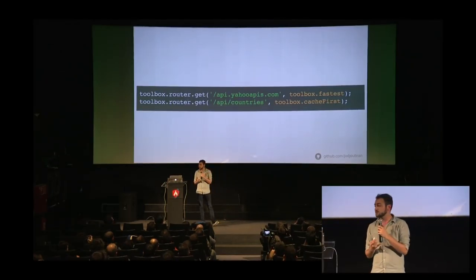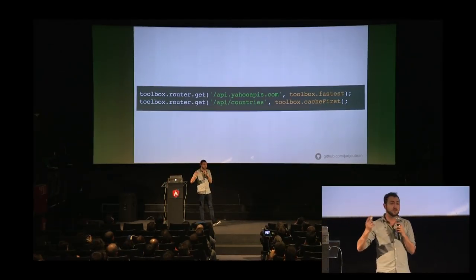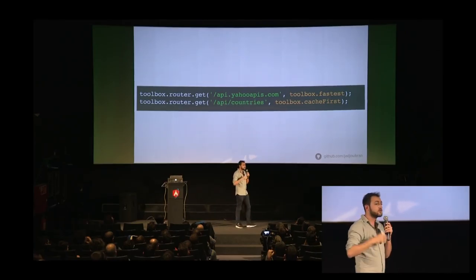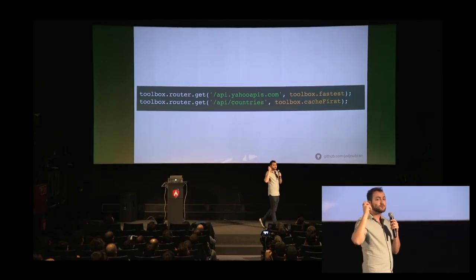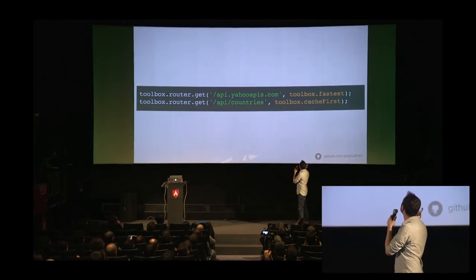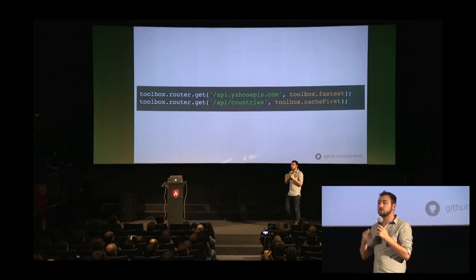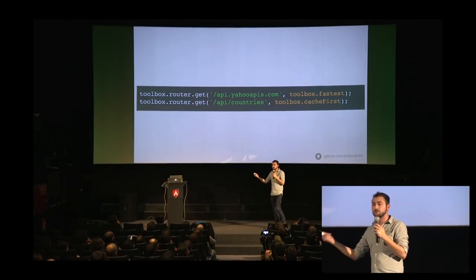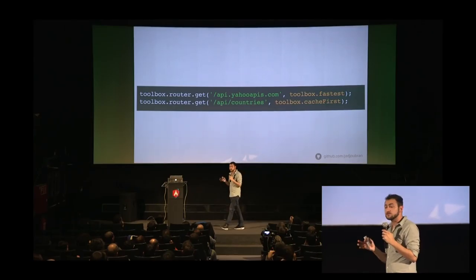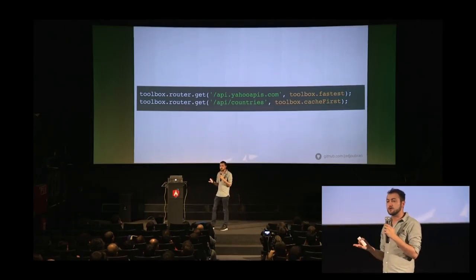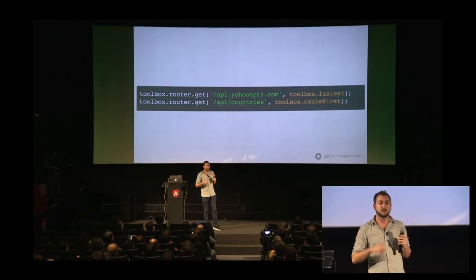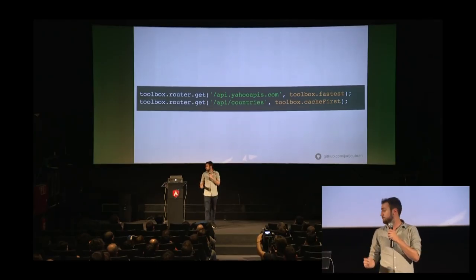This is how you specify a strategy: for a given route or regular expression, you say toolbox.fastest. Whereas for data from an API — if you know you're getting a static list of countries — you'd use cache first. That's how you can apply different caching strategies to different routes.